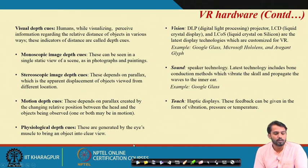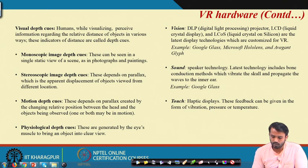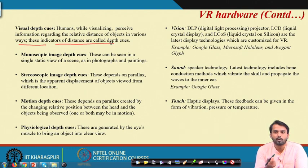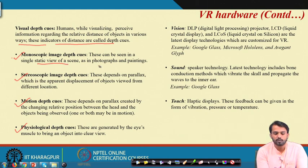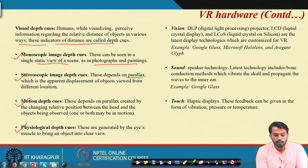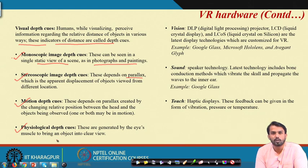What are visual depth cues? While visualizing, humans perceive information regarding the relative distance of objects in various ways — these indicators of distance are called depth cues. There are four types: monoscopic image depth cues, related to static views as in photographs and paintings; stereoscopic depth cues, which depend on parallax — the apparent displacement of an object viewed from different locations; motion depth cues, which depend on parallax created by changing the relative position of the head and observed objects; and physiological depth cues, generated by the eye muscles to bring an object into clear view.